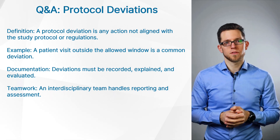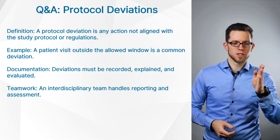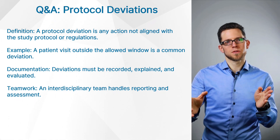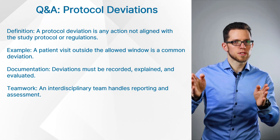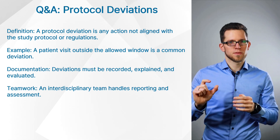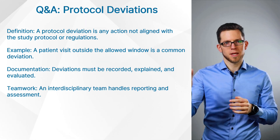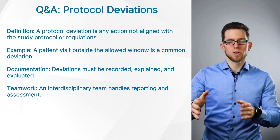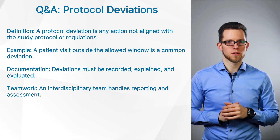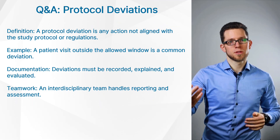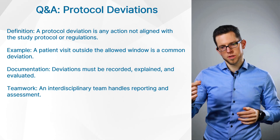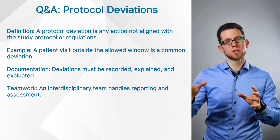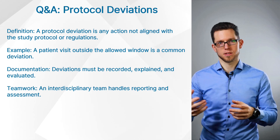A good example is: you should have your first study treatment on day one, and exactly two weeks after you should return to the study site and receive your second treatment. Usually these visits have visit windows, for example plus or minus two days, but what happens if you return on week three simply because you were on vacation on week two as a patient? Well, this becomes a protocol deviation.